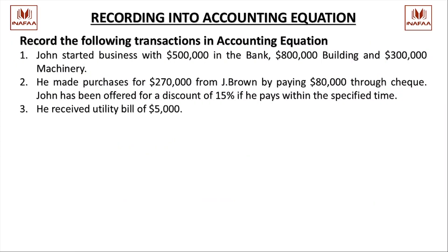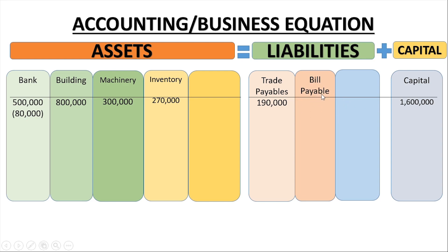Next transaction: a utility bill of $5,000 is received. This creates both an expense and a liability. The liability is recorded as 'bill payable' (not trade payable) for $5,000, and capital is decreased by $5,000 because any expense results in a decrease in capital — though it is not a direct entry.